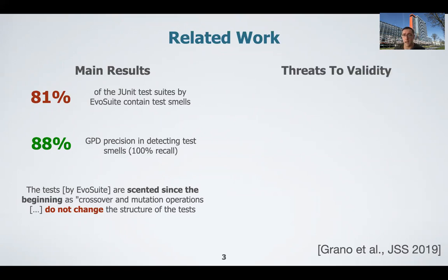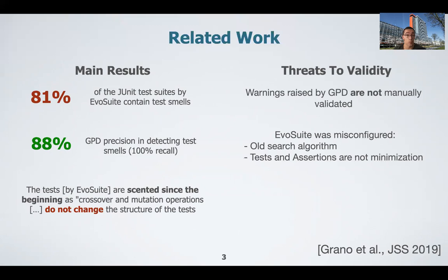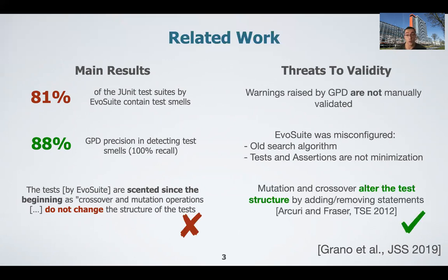We carefully reviewed the paper and identified many important critical threats to validity. Here I am summarizing only the most critical ones. First, 81% is not the actual number of test smells but the number of warnings that their tool raises, and the authors did not manually validate the test smells. Besides, we also found that the EvoSuite configuration was misconfigured, particularly regarding post-process minimization — at the end of the search, test cases and assertions are minimized to improve maintainability. Finally, we also highlight that the statement about the test structure is actually incorrect: mutation and crossover do change the structure of test cases by adding and removing statements, as detailed in the original paper by Arcuri and Fraser from 2012.